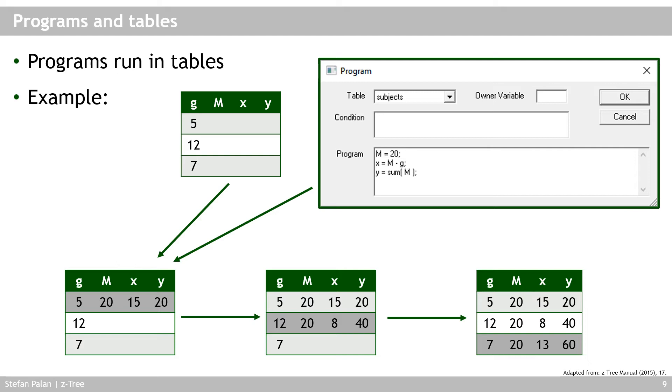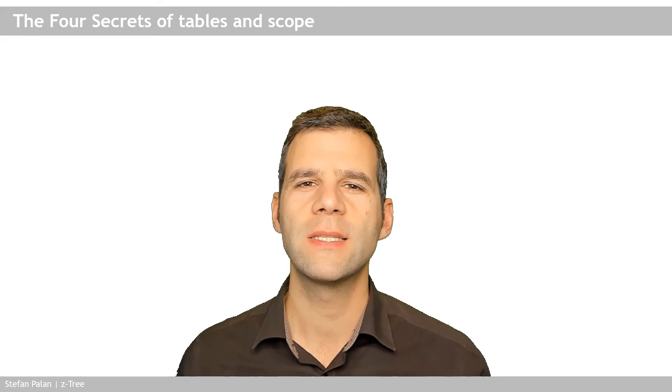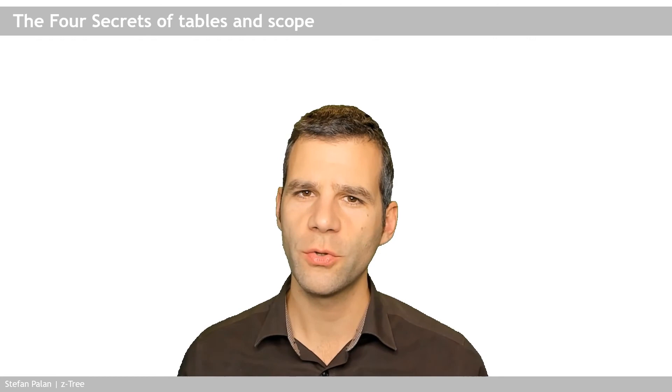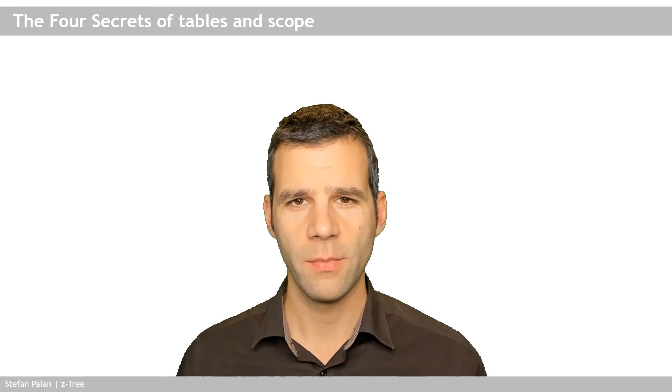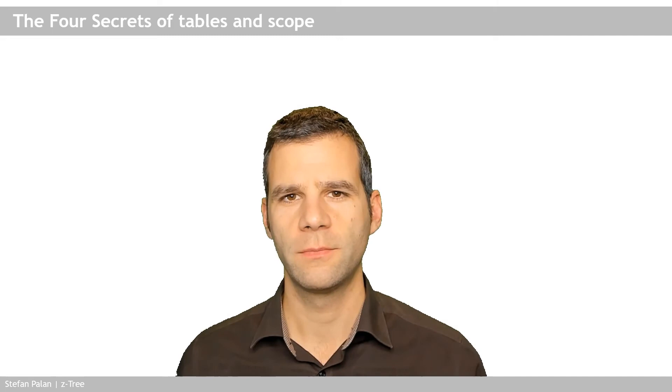Tables and the scope environment are probably the least understood aspects of Z3 by beginners and even some regular users, yet understanding them is critical to realizing great programming ideas or figuring out why your code isn't doing what you expect. It's not hard to learn — it just takes a few minutes. There are four secrets, and if you haven't understood the scope environment yet, this is going to be a real eye-opener.